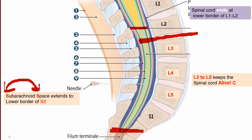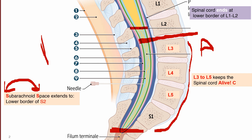So our spinal needle must be inserted anywhere in between these vertebral spaces. This is the lateral aspect of the spinal cord with the vertebral column shown, with the anterior aspect of the body on one side and the posterior on the other. We have two spaces here: the upper space is between L3 and L4, and the lower space is between L4 and L5. So we can insert our spinal needle anywhere between L3-L4 or L4-L5.